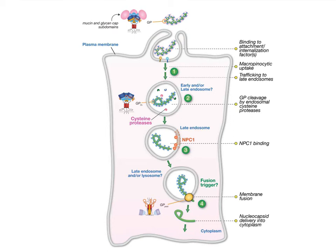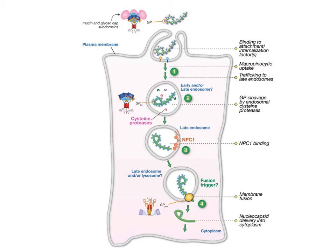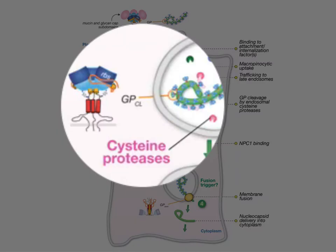Eventually, these pinocytic vesicles traffic to late endosomes — they move into the endocytic pathway, as you can see here. So this Ebola virus is attached to its receptor in the endosome, moving into the cell.